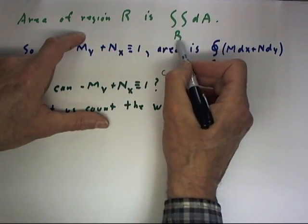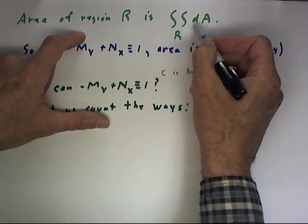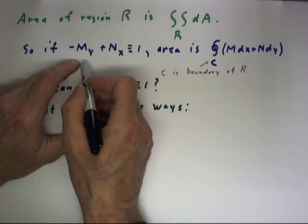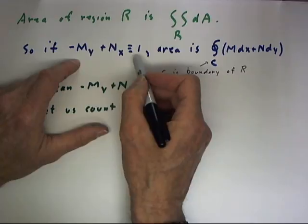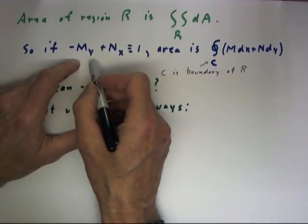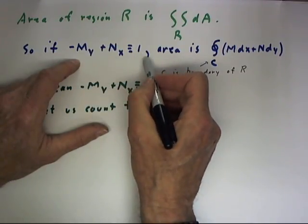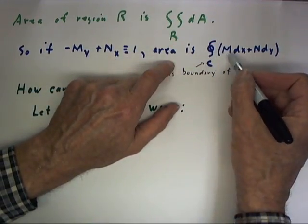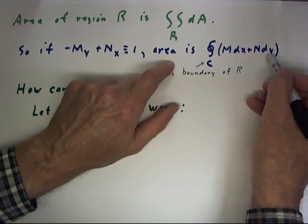The area of a region R is the integral over R of the area increment. If -M_y + N_x is identically equal to 1, if it's always equal to 1, then the area is the integral over the boundary of Mdx + Ndy.